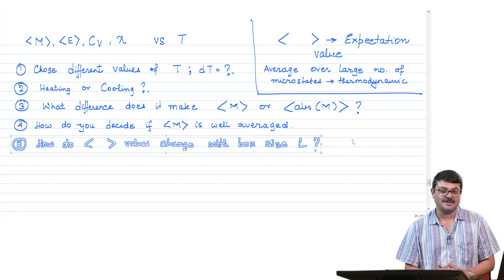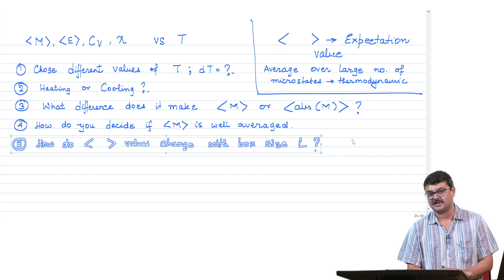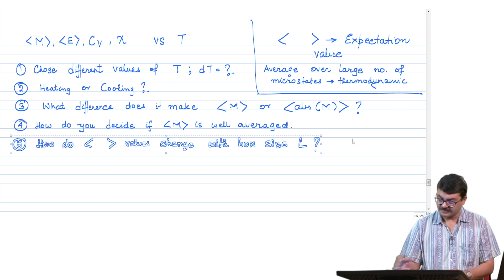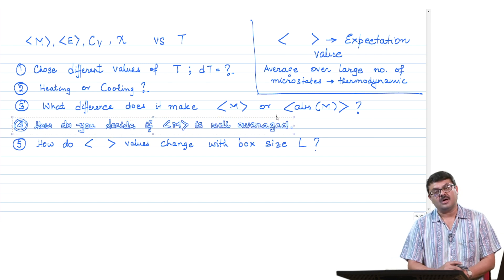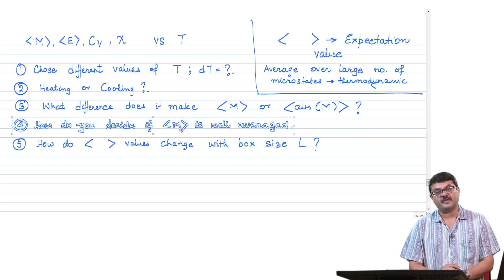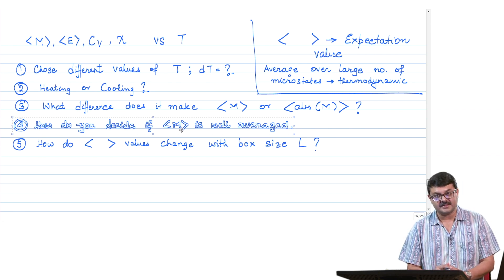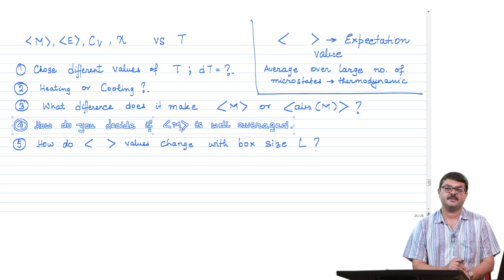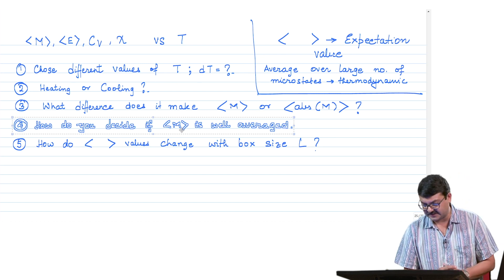A 20×20 box has 400 spins and a 40×40 box has 1600 spins — does that give the thermodynamic limit? How do we get the thermodynamic limit? Are there finite size effects? Another question is: at any particular temperature, over how many Monte Carlo steps should we average so that the expectation value of m is well averaged? These are the questions we shall be discussing as we plot various thermodynamic quantities to identify the transition temperature and understand the phase transition.